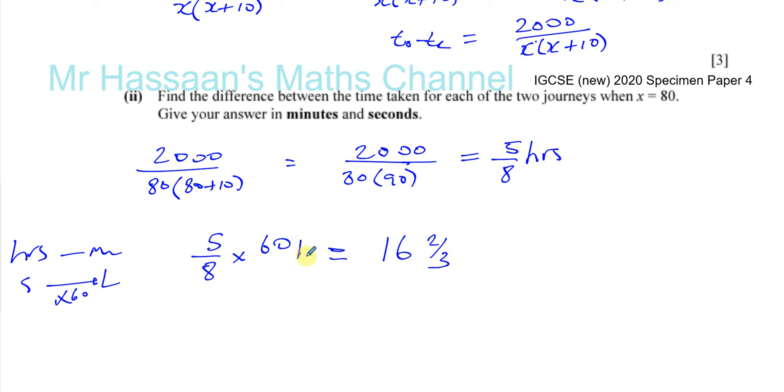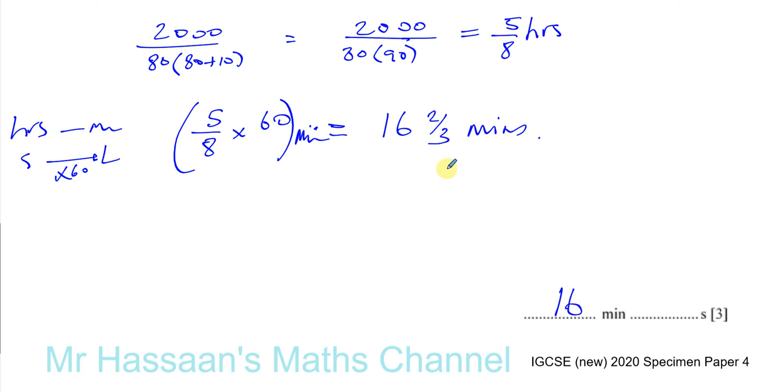So this is now in minutes. So this is 16 and 2 thirds minutes. So it means we've got the answer as 16 whole minutes. And then we have 2 thirds of a minute. So 2 thirds of a minute is going to be 2 thirds times 60 seconds. So 3 goes into 62 times, that's 40 seconds. 2 thirds of 60 is 40. So it's 16 minutes and 40 seconds. And there we have the answer.